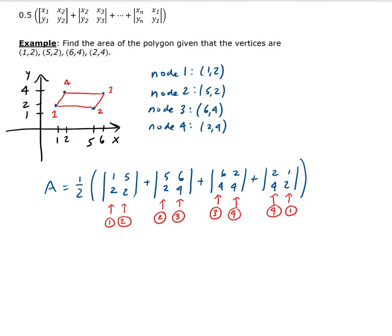We're going to get the area. It's 1/2. The determinant of the first matrix is going to give you -8. The first one was 2 minus 10, that's -8. Next one is 20 minus 12, that's 8. The third one, we have 24 minus 8, so that's 16. And then we have 4 minus 4, which is 0.